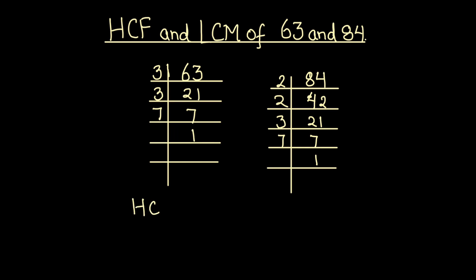First we will find the HCF of the two numbers. For finding the HCF, we are going to write the numbers in terms of their prime factors. So 63 is 3 times 3 times 7 times 1 and 84 is 2 times 2 times 3 times 7.